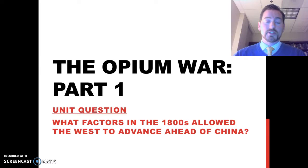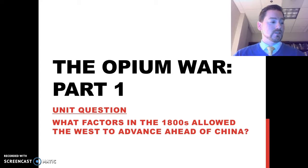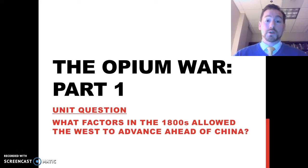As we go through this unit, I want you to think about that question and consider what kinds of events were happening throughout the world and in East Asia that were having an impact on China's development. It's very important that we understand that up until about 1800, China had been a very dominant global power — in terms of life expectancy, commercial development, standard of living, and legal and property rights, China was on par with and in some cases surpassed Western European countries.